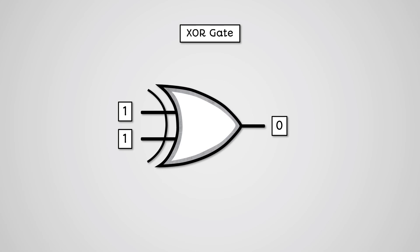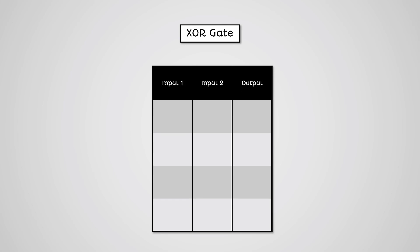We have seen how an exclusive OR gate is represented as a logic diagram. For this truth table, we again need to write down all of the combinations of inputs we can have. As it has two inputs, it has the same combinations as we had for the AND and OR gates. Once we set up our truth table with our inputs, we can then write out our outputs. With an exclusive OR gate, we get an output of 1 if only one input is 1; otherwise, it outputs 0.